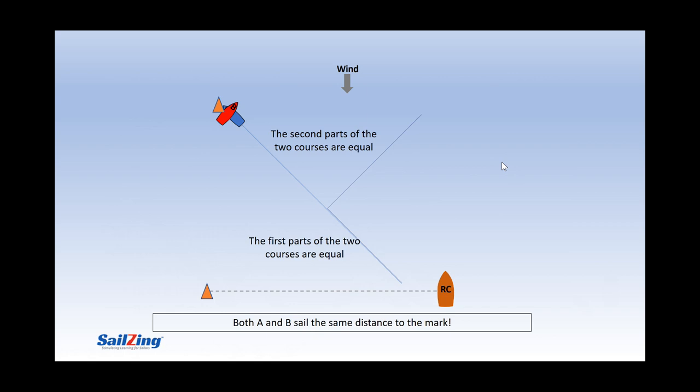Of course, if the wind is the same for both, B will get there later because she has to tack. Also, even if they do arrive at the same time, A would have right of way at the mark. But the point is that even with the mark off center, the distances sailed are the same.